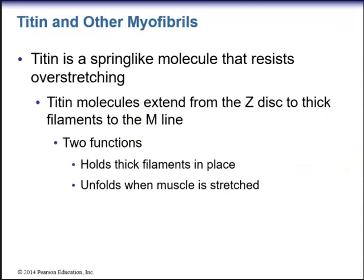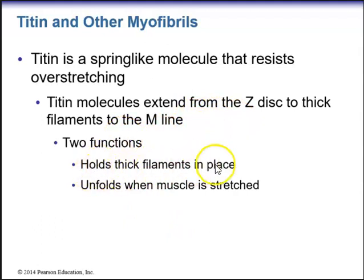There are other structures within the sarcomere. Titin is a spring-like molecule that resists overstretching. Titin molecules extend from the Z-disc to thick filaments to the M-line. Its two functions are to hold the thick filaments in place and to unfold when the muscle is stretched.